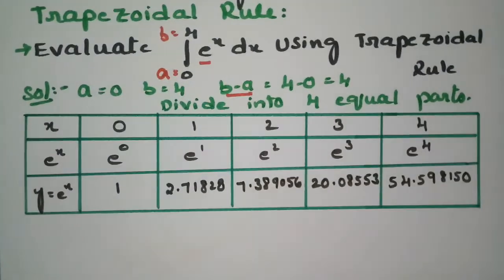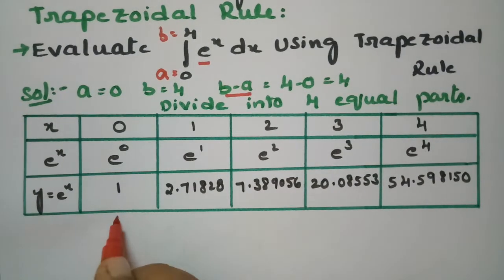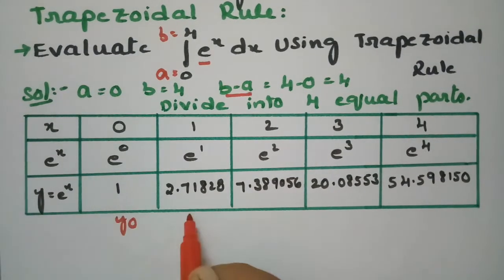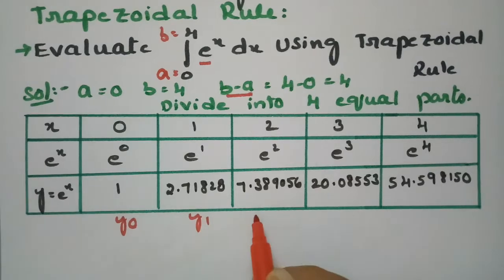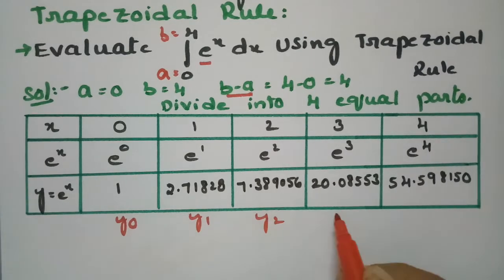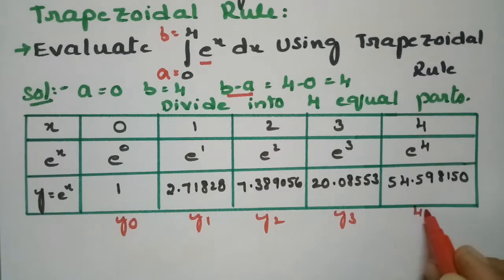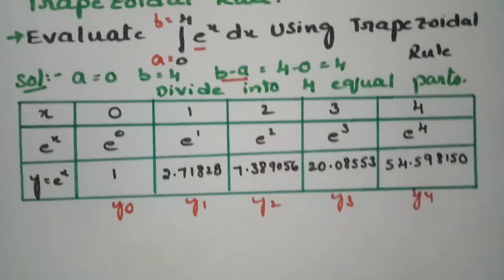After getting all these values, we have to name them. So this will be y0, this is y1, this is y2, this is y3, and this value is y4.